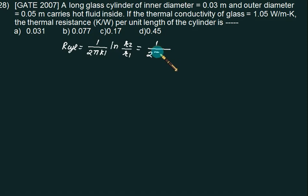1 upon 2π, K is 1.05, ln of 0.05 by 0.03.